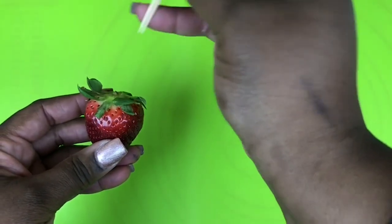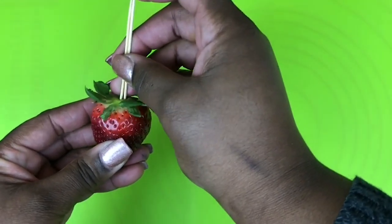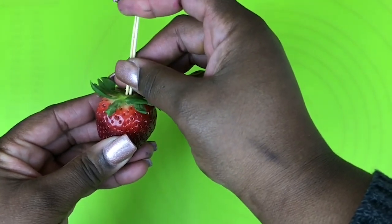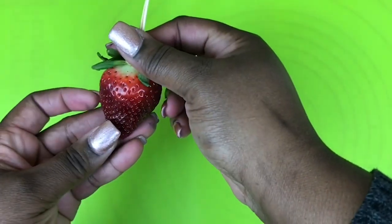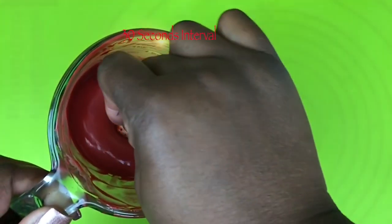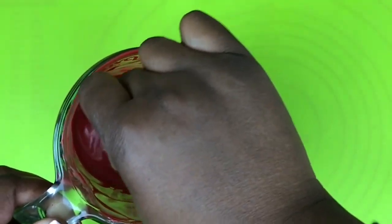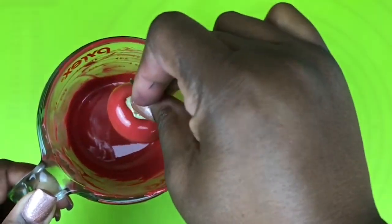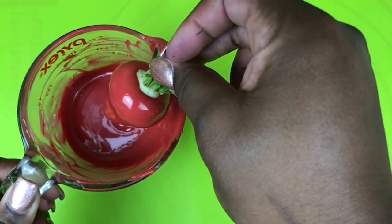Once you have done that, take your toothpick and insert them in the top of your strawberry. Now once you have melted your chocolate for 30 second intervals, make sure your chocolate is nice and smooth. You want to go ahead and dip, scrape the bottom and then place it onto your surface to dry.